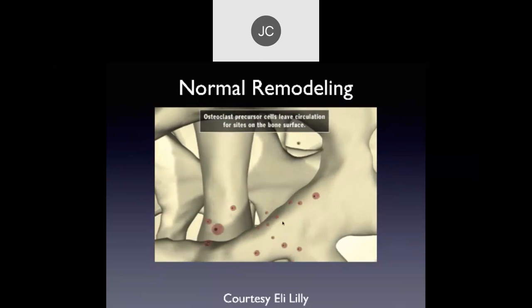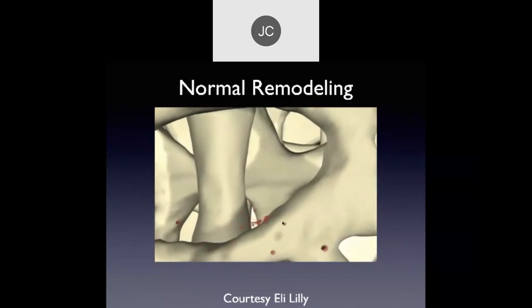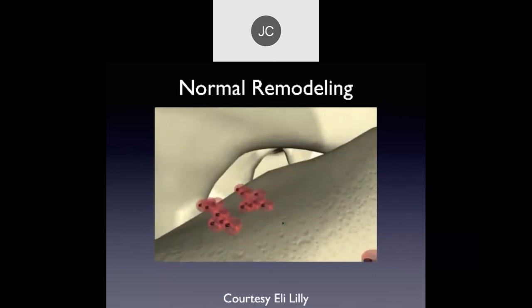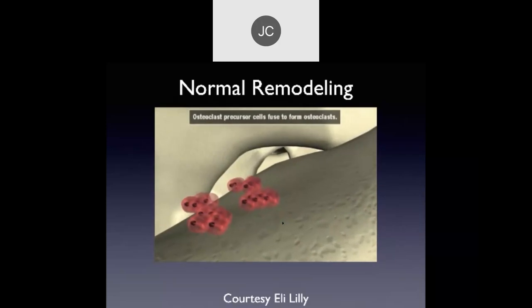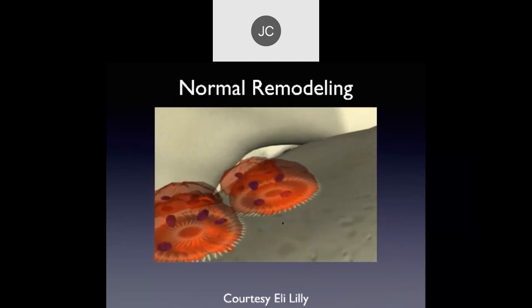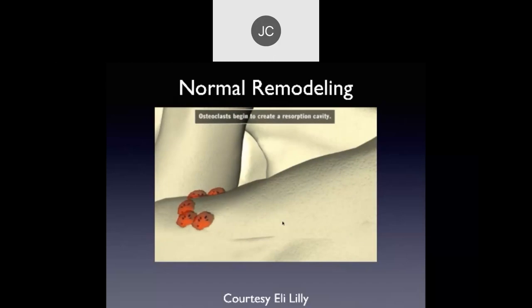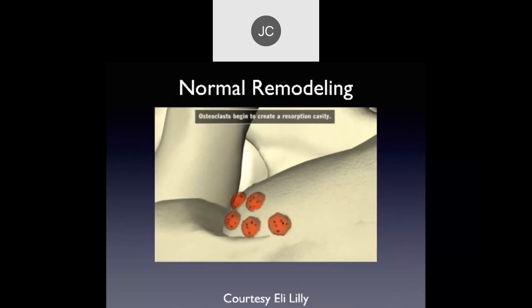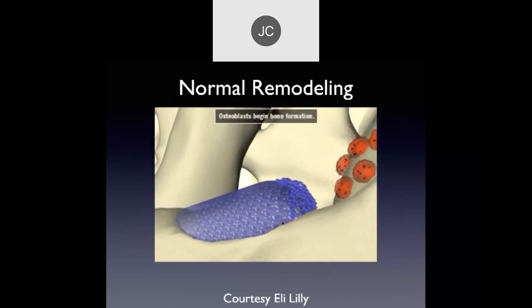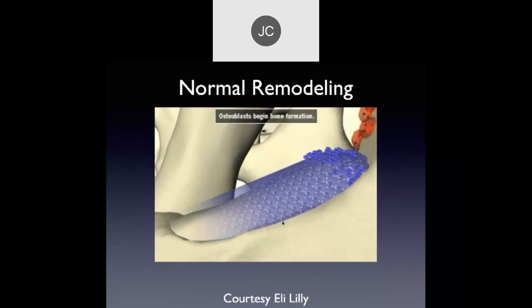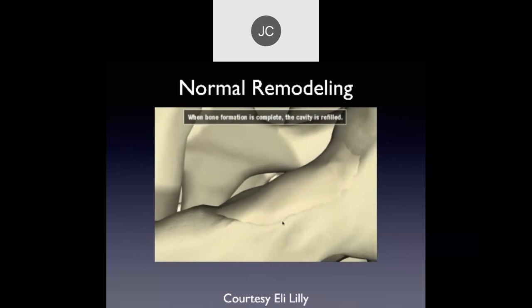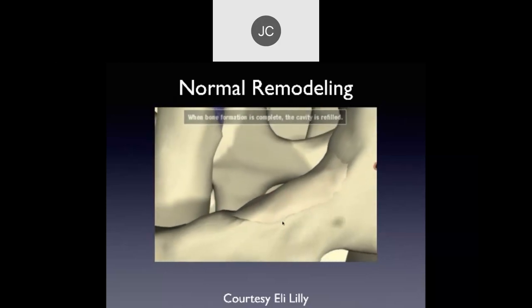To initiate a new remodeling cycle, mononucleated osteoclast precursor cells leave the peripheral circulation for sites on the bone surface. These cells fuse to form multinucleated osteoclasts. The osteoclasts remove the old bone matrix, creating a resorption cavity — this takes about one and a half months. The osteoclasts are followed by osteoblasts that refill the resorption cavity, taking about five months — more than three times the duration of resorption. At the end of the cycle, the resorption cavity is refilled and a new packet of bone has been formed.